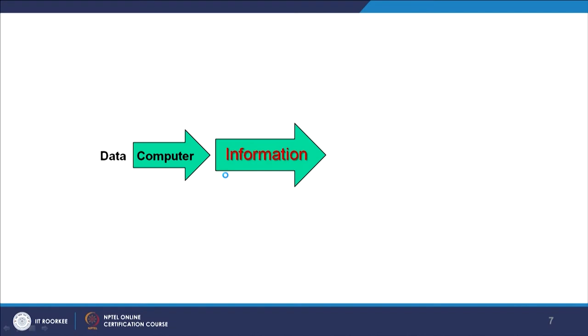Raw data, using computers, can be transformed into information. But when we apply GIS analysis and modeling on data, we can ultimately convert raw data coming into your system into knowledge. Knowledge means it can answer not just one question but many questions, and many complicated queries can also be raised and answered.